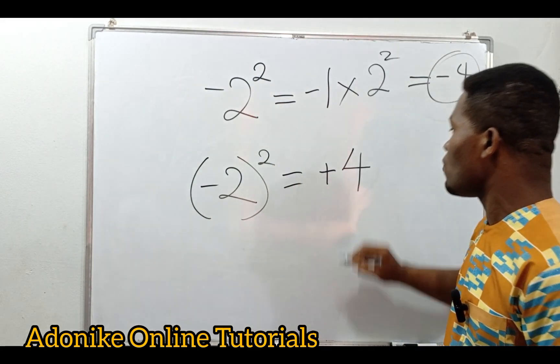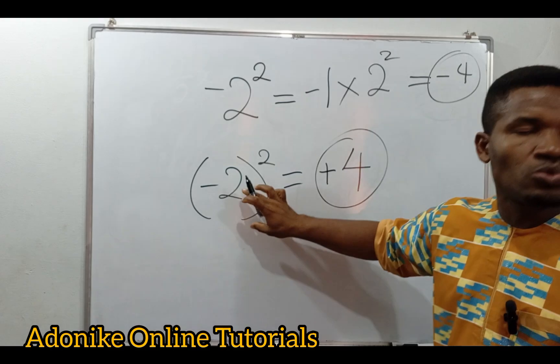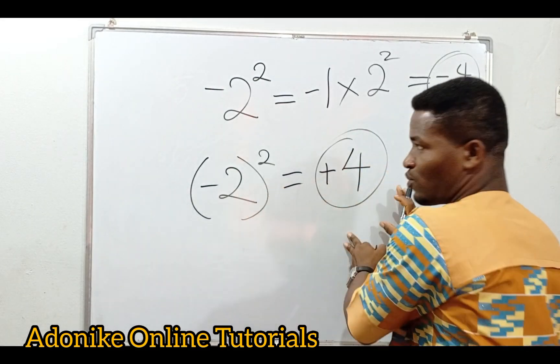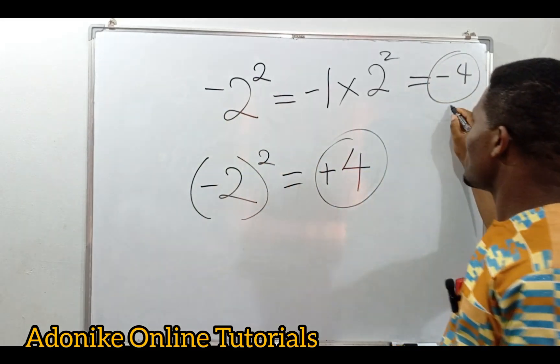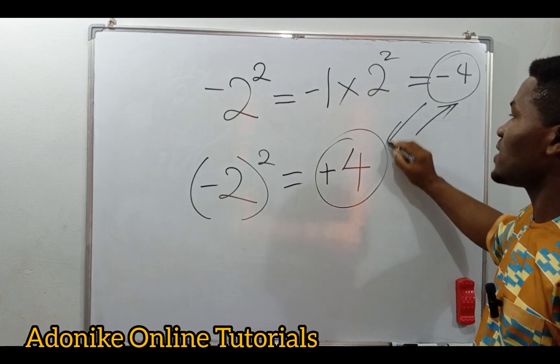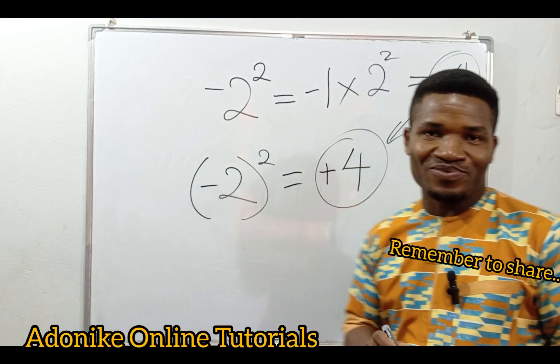So in this case, minus two all squared gave us plus four, whereas minus two squared gave us minus four. So they are not actually the same. Thank you very much.